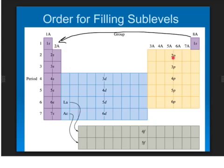And I've also got them labeled with the sublevel that corresponds to that row. The blocks are not coincidentally the same number of columns as the number of electrons in those sublevels. For example, in the S block, we have two columns. Well, there are two electrons that can fit into any S sublevel.